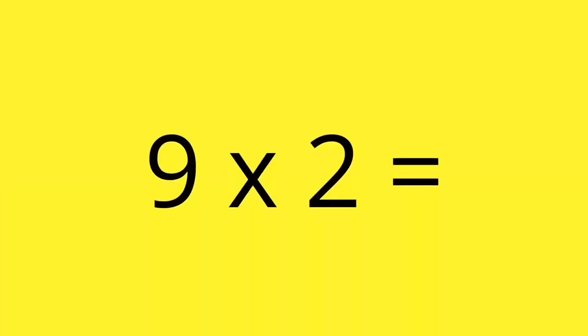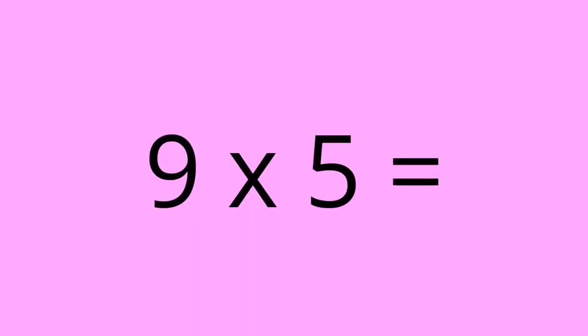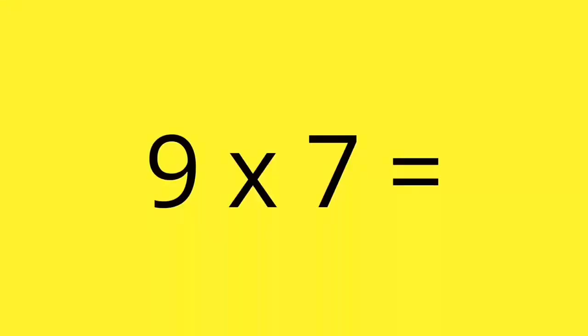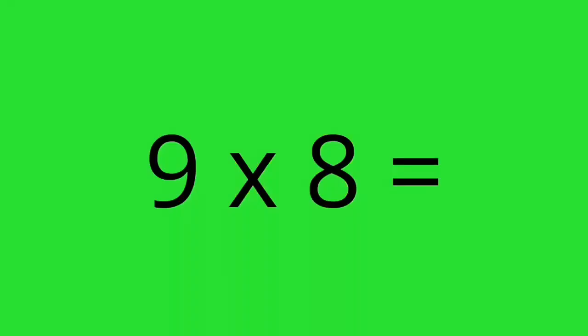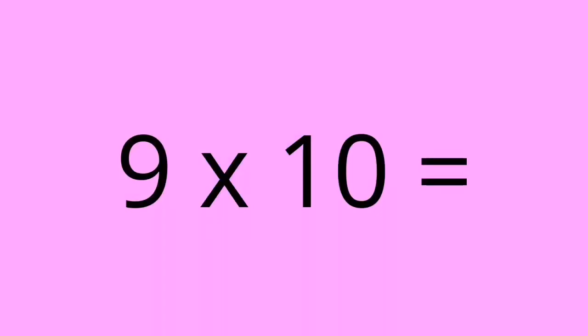9 times 1 equals 9. 9 times 2 equals 18. 9 times 3 equals 27. 9 times 4 equals 36. 9 times 5 equals 45. 9 times 6 equals 54. 9 times 7 equals 63. 9 times 8 equals 72. 9 times 9 equals 81. 9 times 10 equals 90.